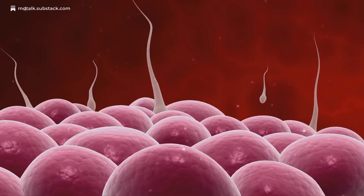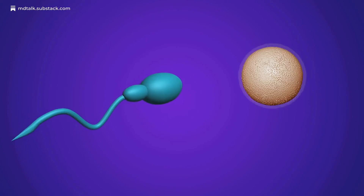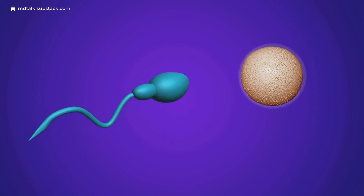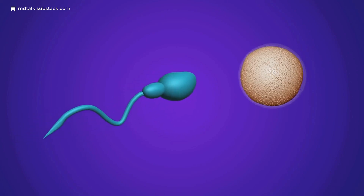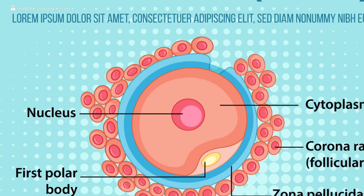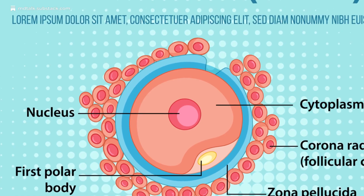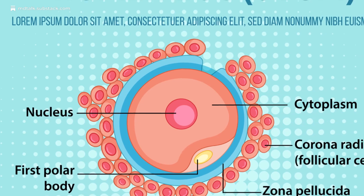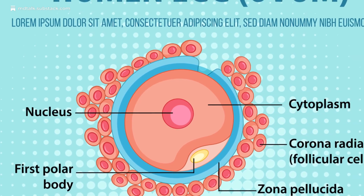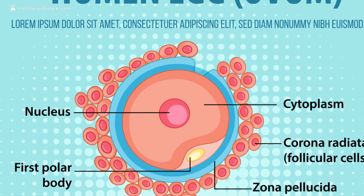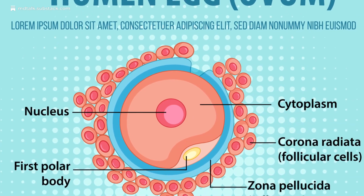Capacitation begins. In the female tract, sperm shed cholesterol and decapacitation factors. Their membranes shift, motility increases, and receptors for the zona pellucida are exposed.